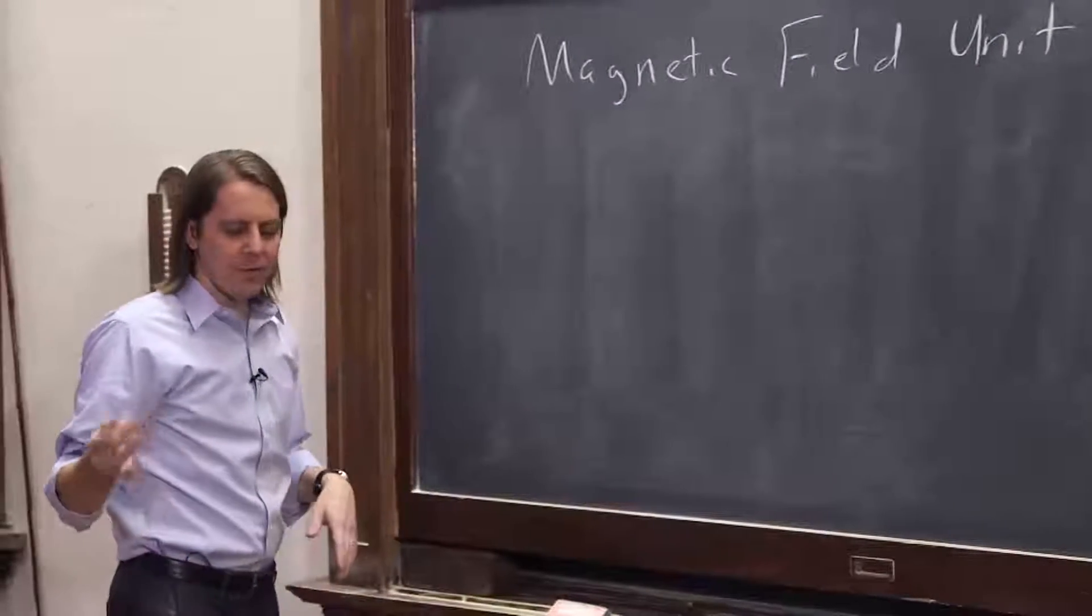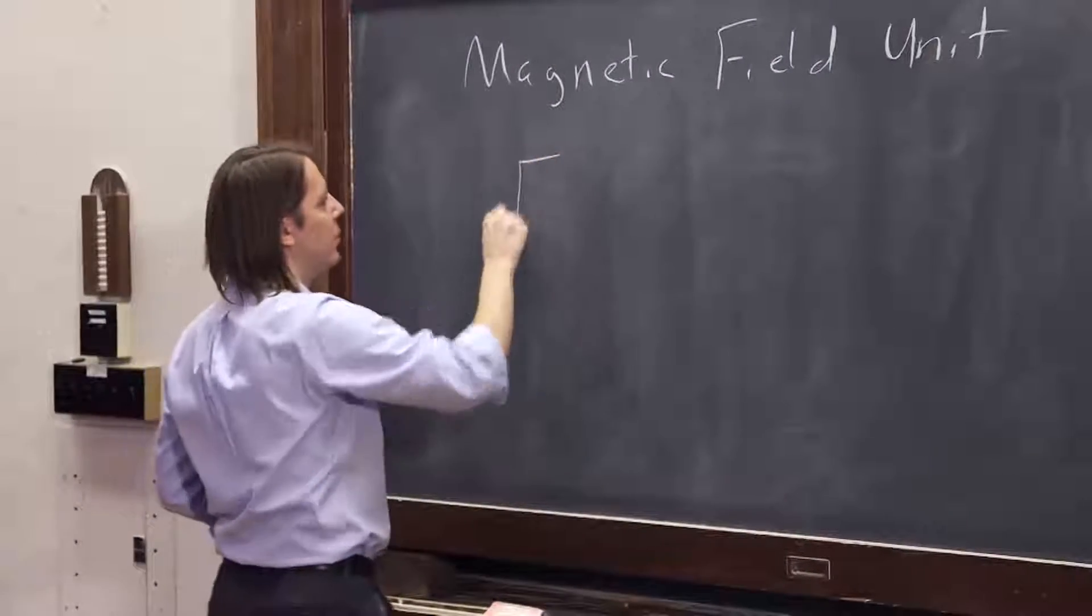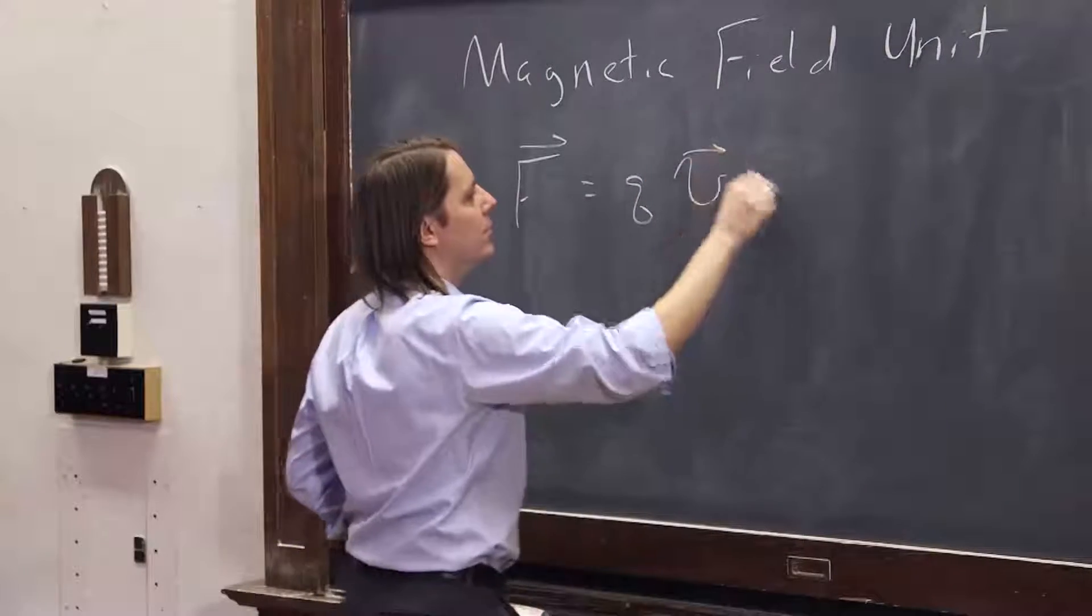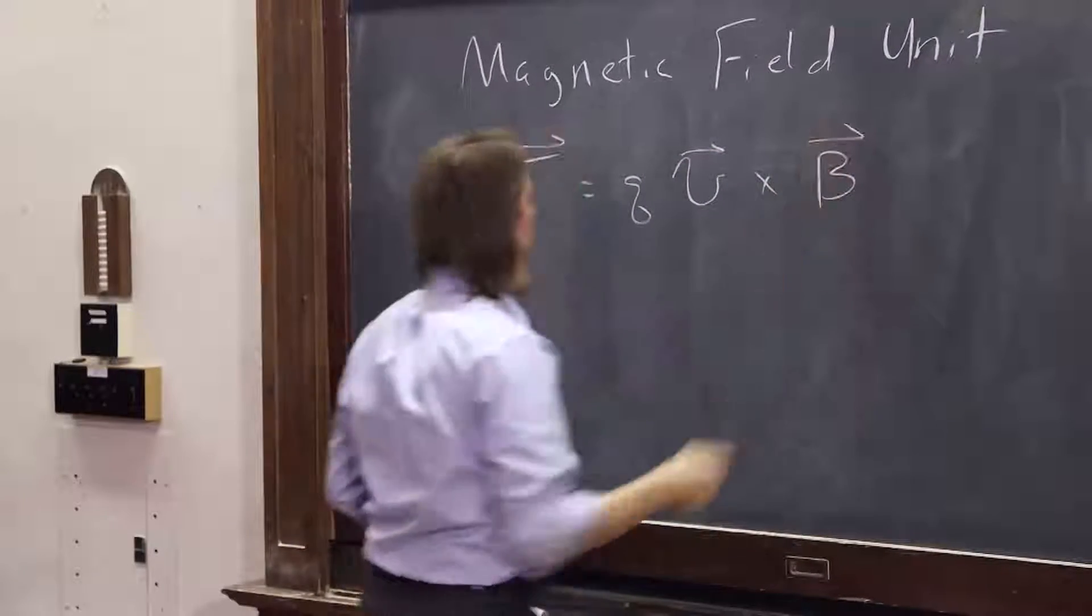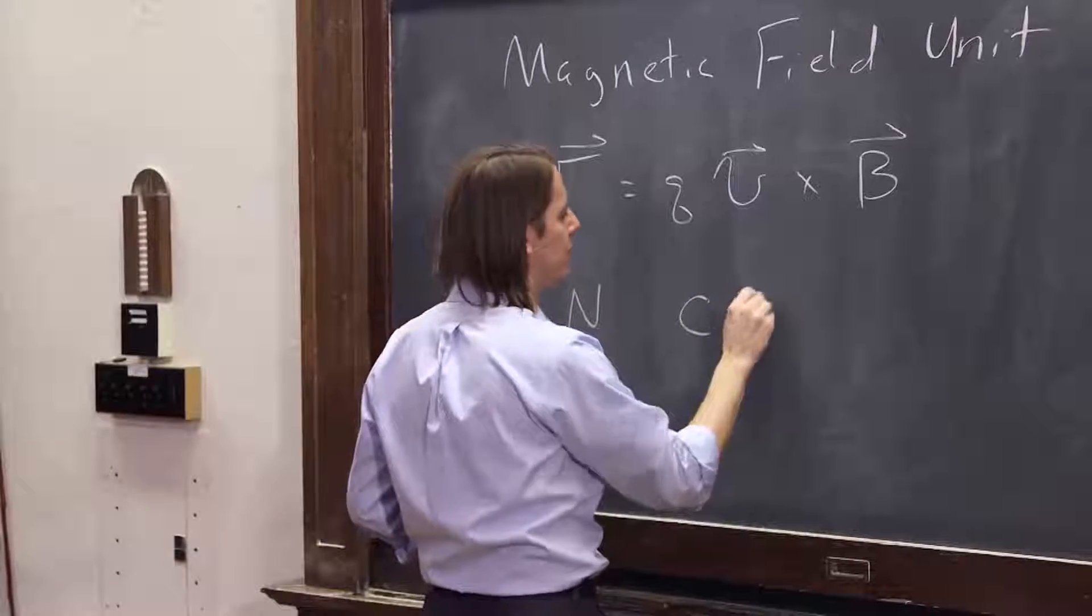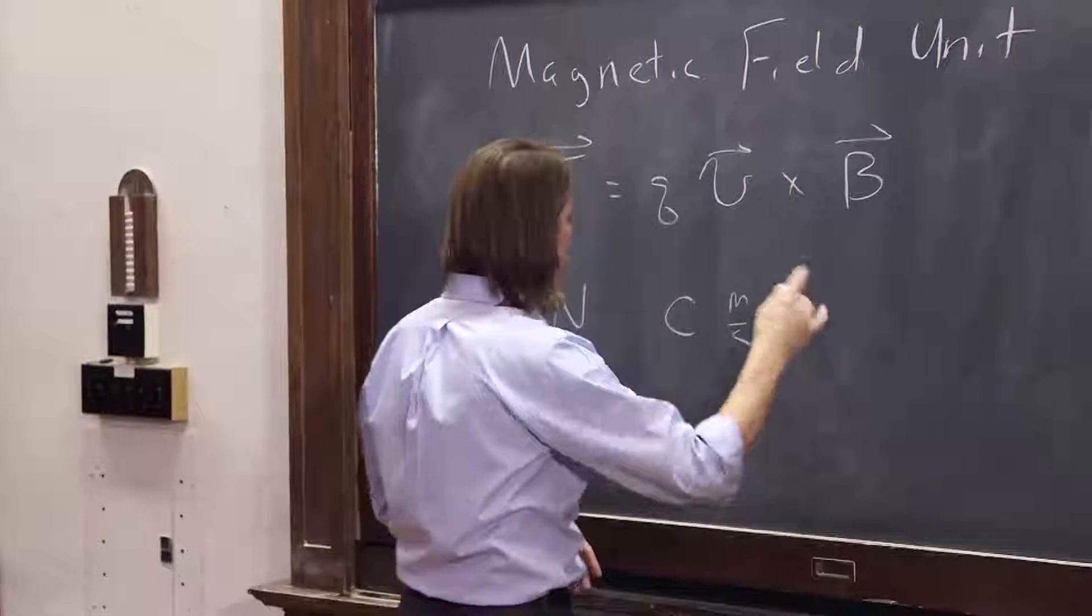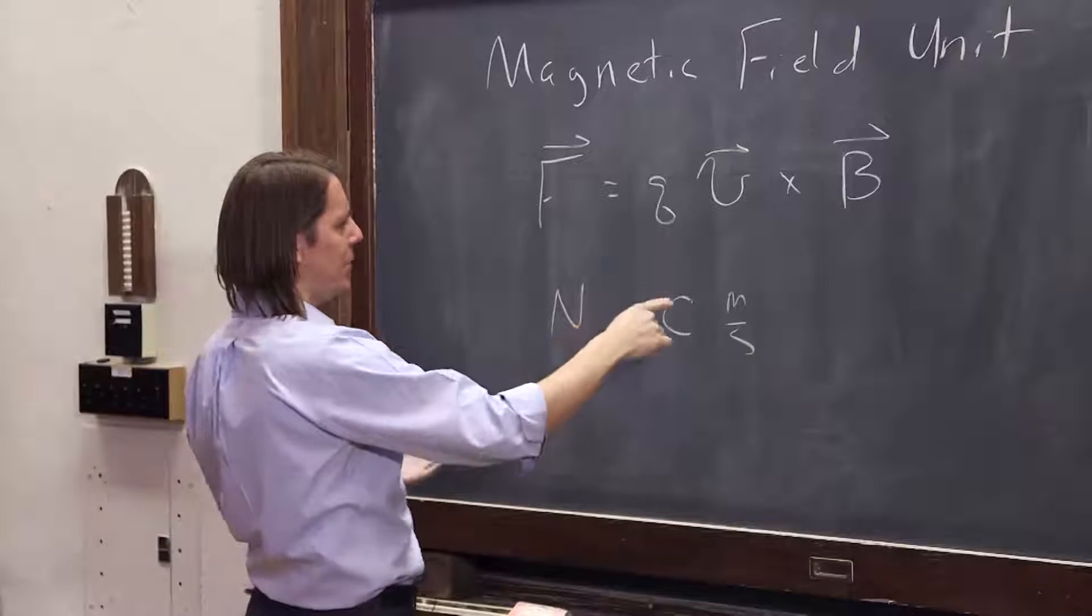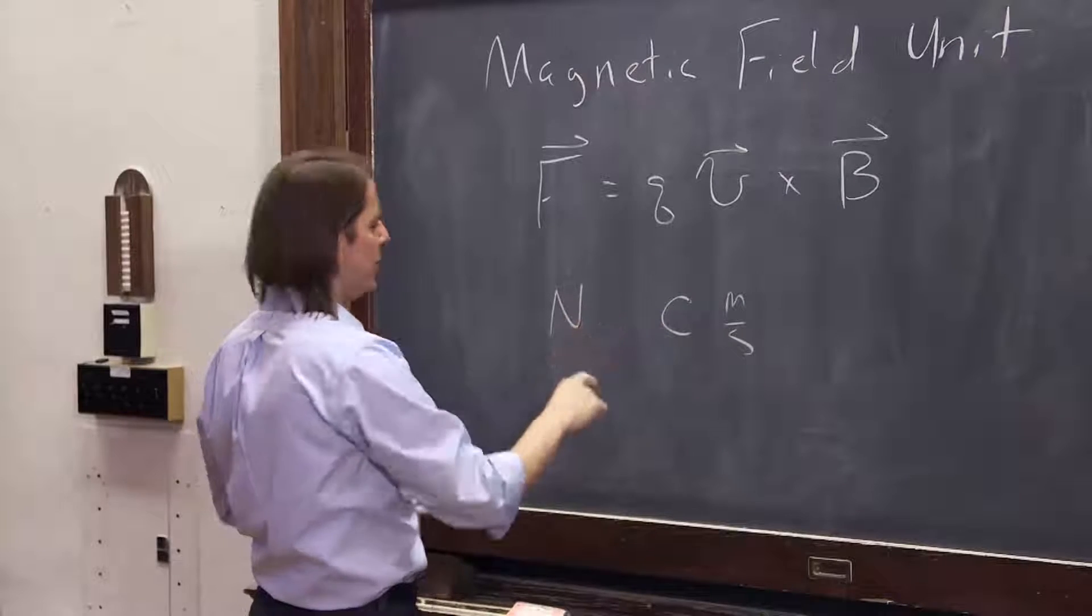So the unit, you can find it by looking at the force equation. F equals Q V across B. So we think this is in newtons, and this is in coulombs, and this is in meters per second. So the unit for B must be in newton-seconds per coulomb-meter.